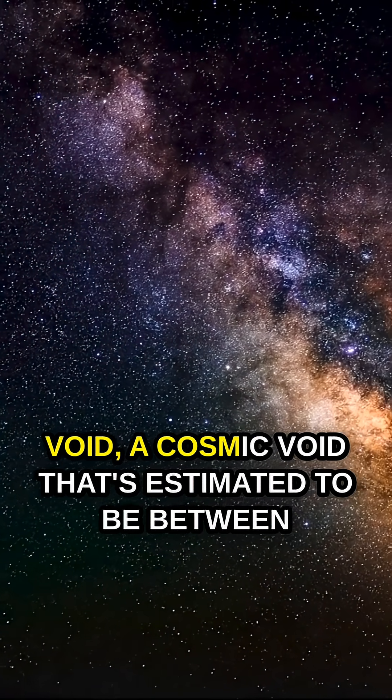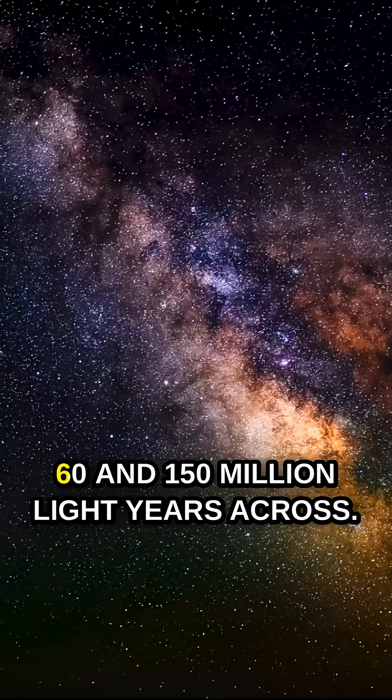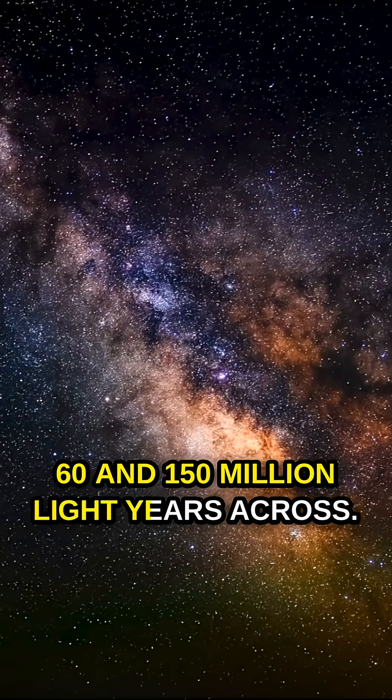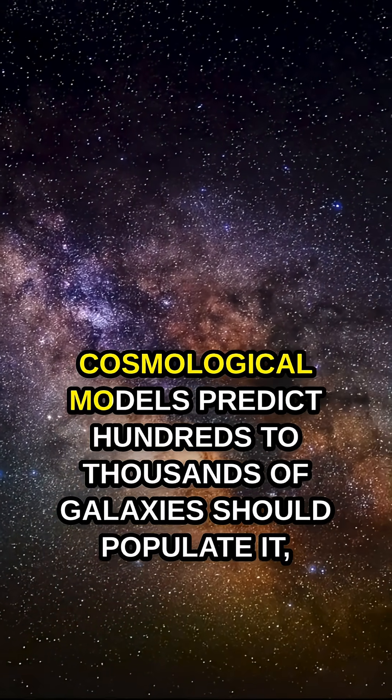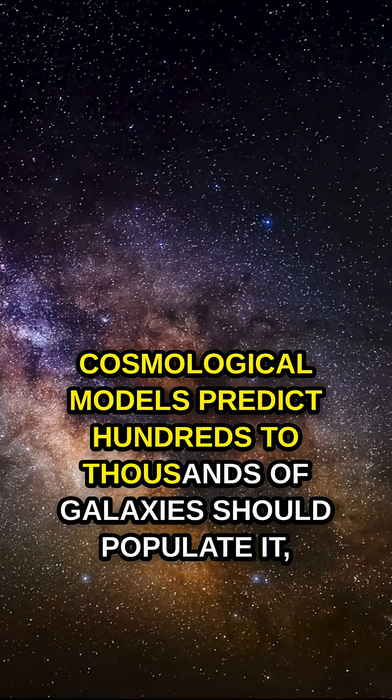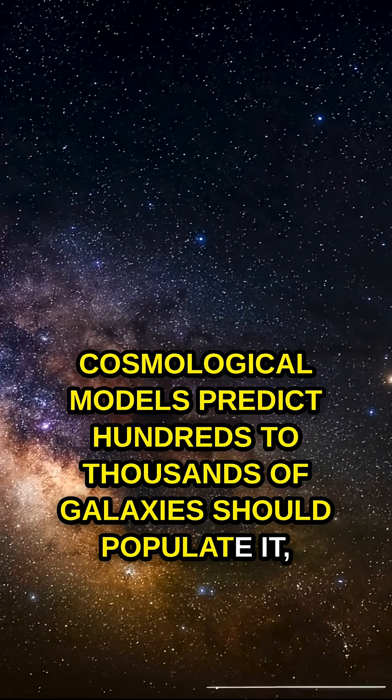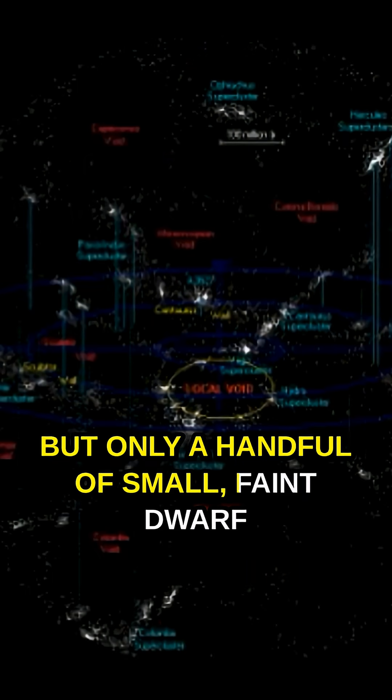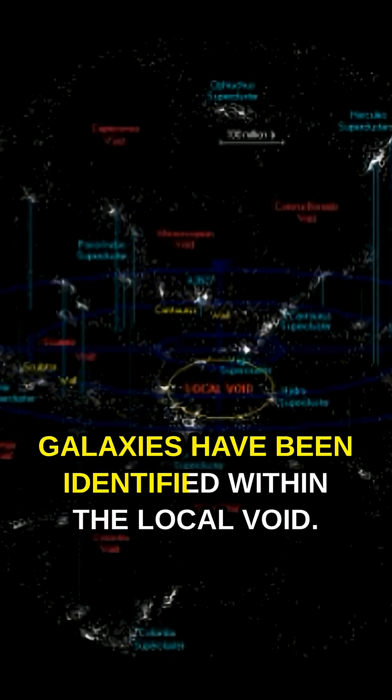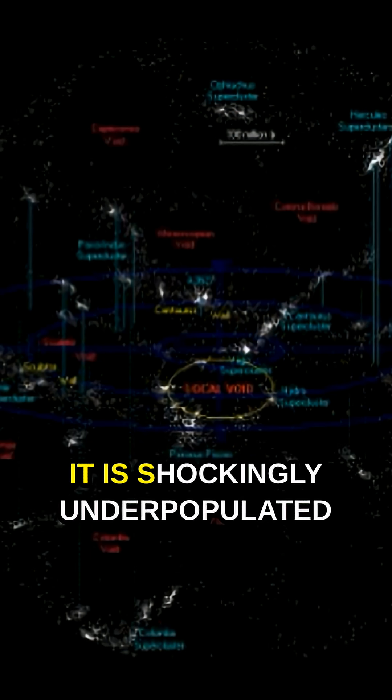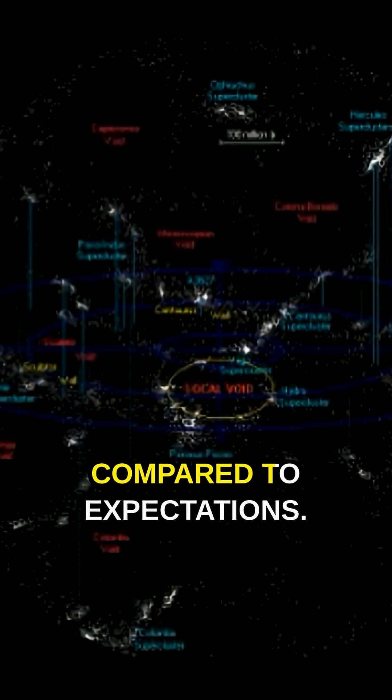The Local Void is a cosmic void that's estimated to be between 60 and 150 million light years across. Cosmological models predict hundreds to thousands of galaxies should populate it, but only a handful of small faint dwarf galaxies have been identified within the Local Void. It is shockingly underpopulated compared to expectations.